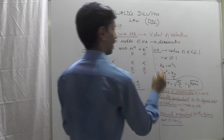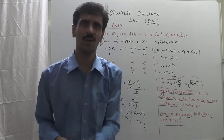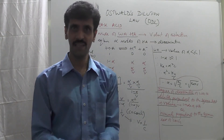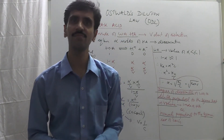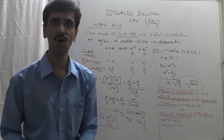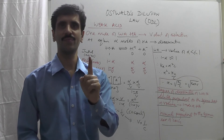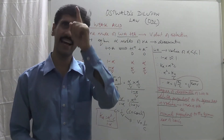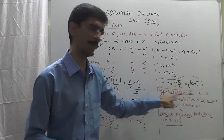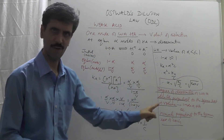This is the statement of Ostwald's Dilution Law from the derived expression. This derivation is only for weak acids — not applicable to strong acids — because for strong acids alpha is very close to 1, making (1 − alpha) ≈ 0, and division by zero gives infinity. So we cannot reach this relation for strong acids.